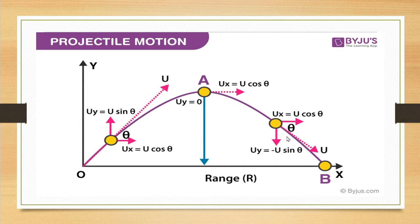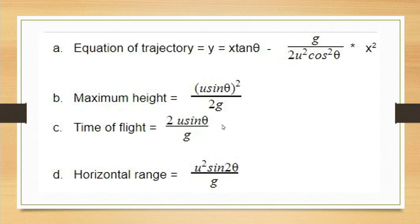This projectile is on the ground, and on the ground strike, the projection velocity is on the ground strike. In this case, let's take a look at the formula — the equation of the trajectory. Let's take a look at the derivation: y = x·tan(θ) − gx²/(2u²cos²θ). This can be written as y = ax − bx², and this is the parabola equation.